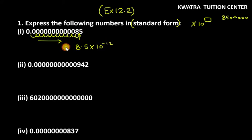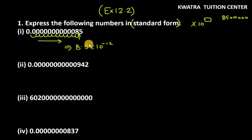This is our standard form. Why did we stop here — why not stop after 5? Because if we did, the number would become 85 into 10 raised to power minus 30, which is also correct but not the proper method. The correct method is to stop the point after just one digit. Here we stopped after 8. You could stop at 9 as well. Let's see how we solve the second one.